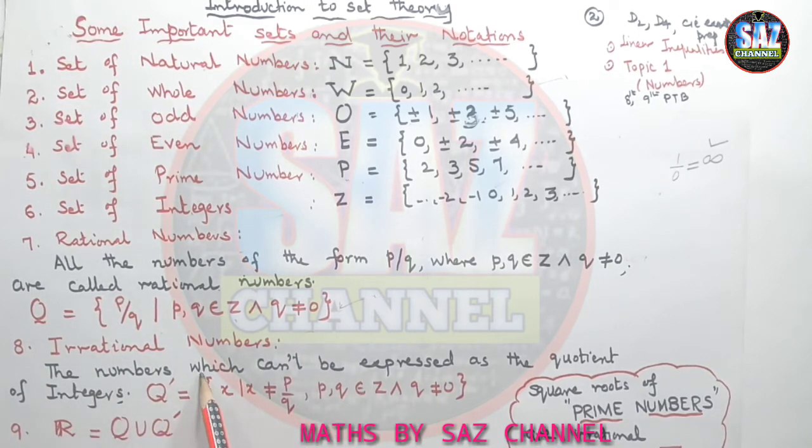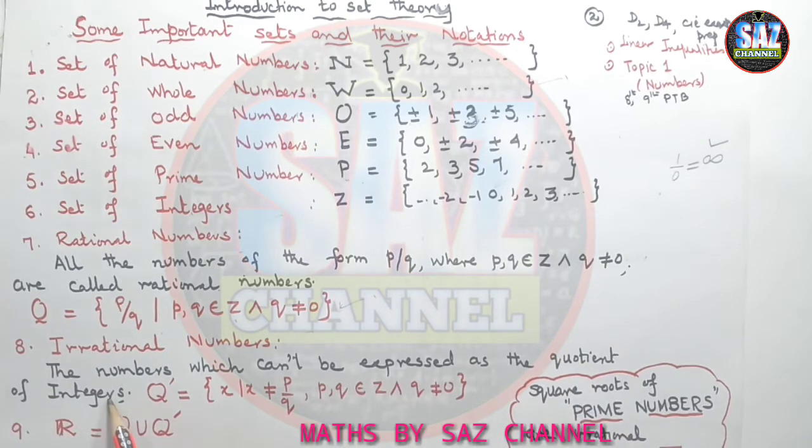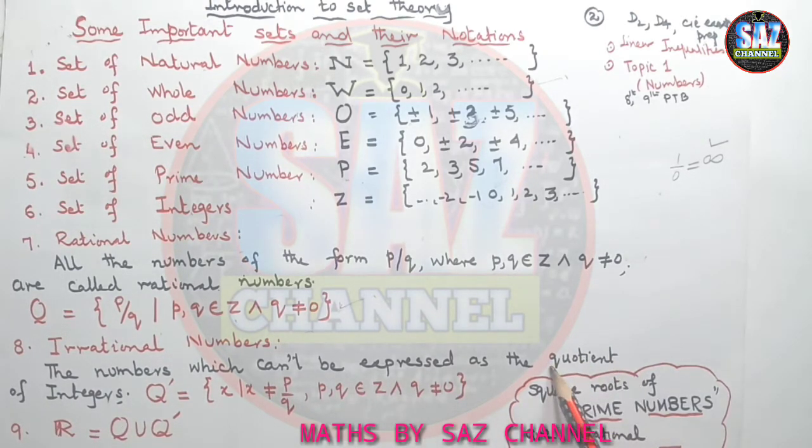Coming to the next type of the sets which is the irrational numbers. Irrational numbers are the numbers that cannot be expressed as the quotient of integers. Like they cannot be quotient means that they cannot be written as the fraction of integers. And their symbol is Q dash and their definition is x such that x should not be equal to p over q and p and q belongs to integers and q should not be equal to 0.